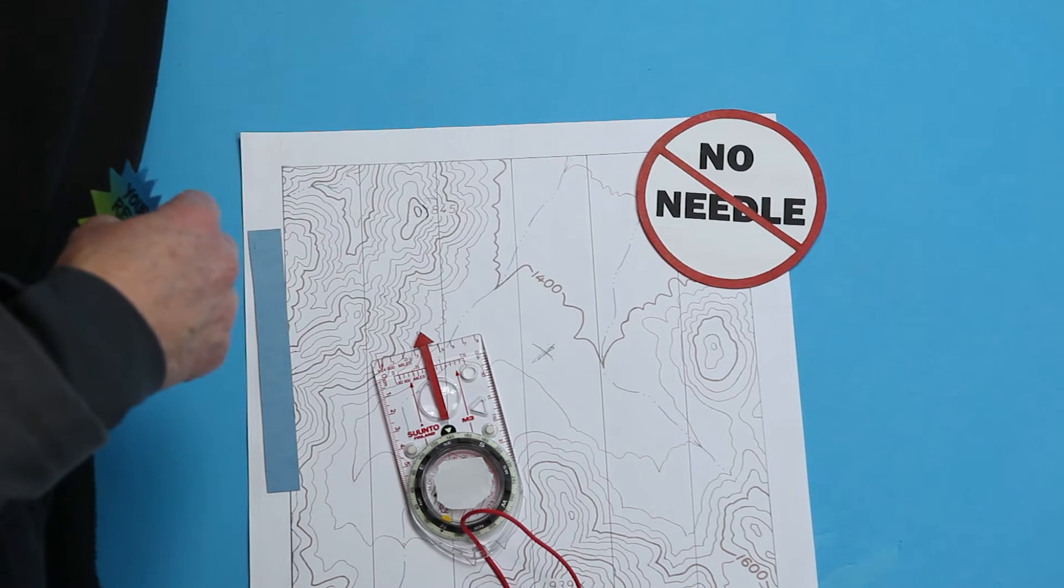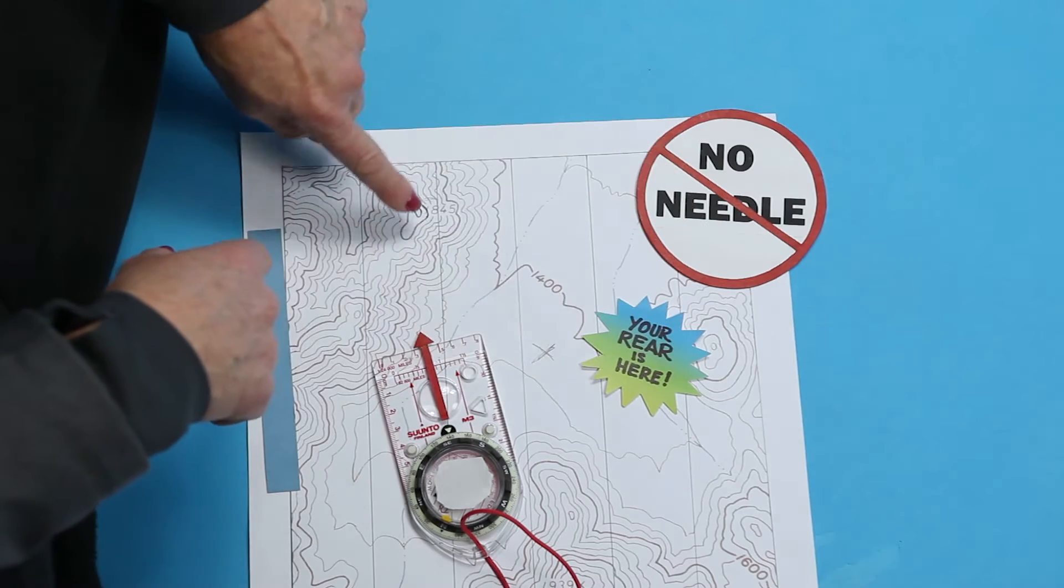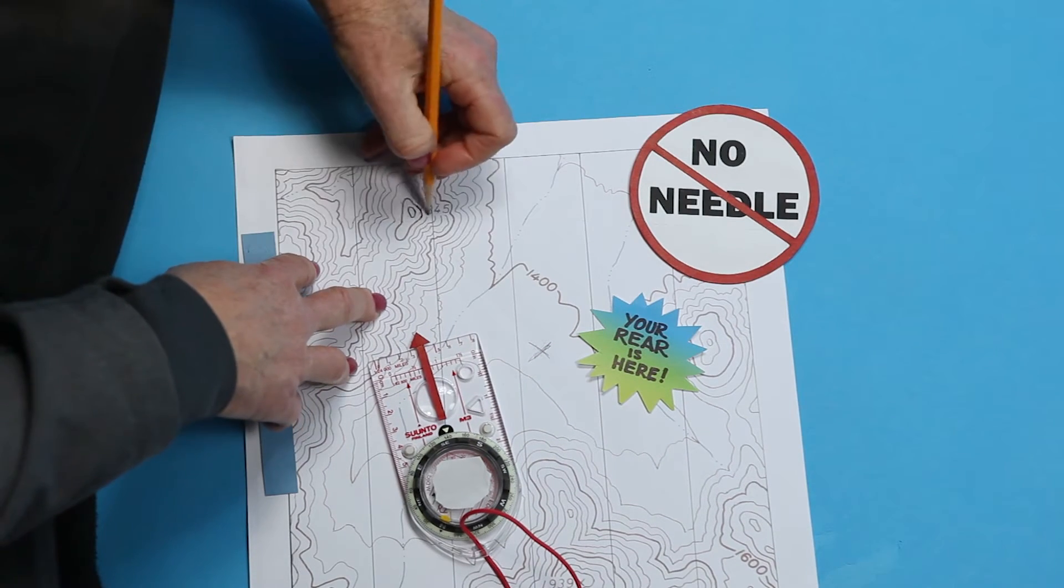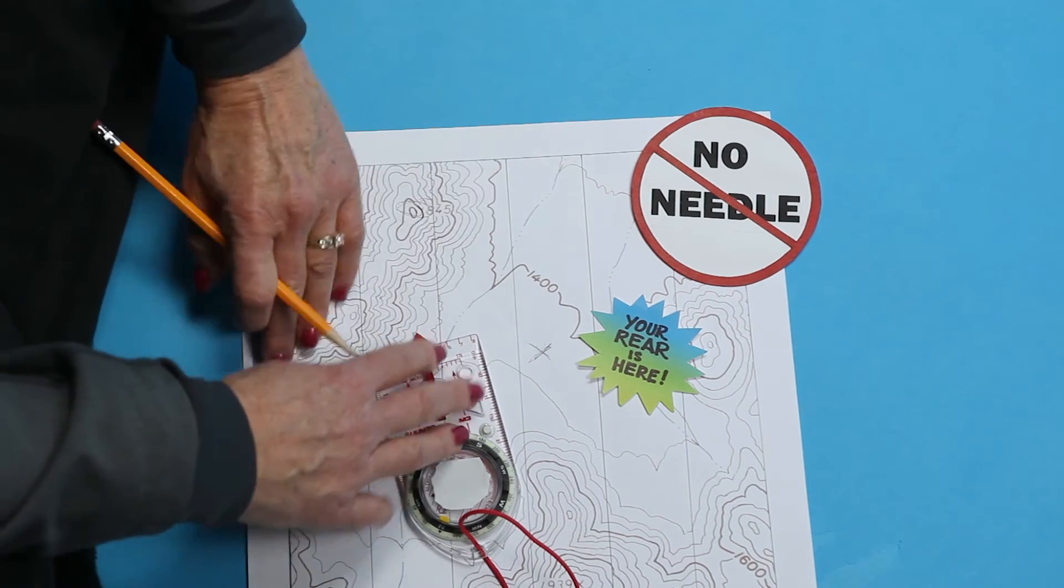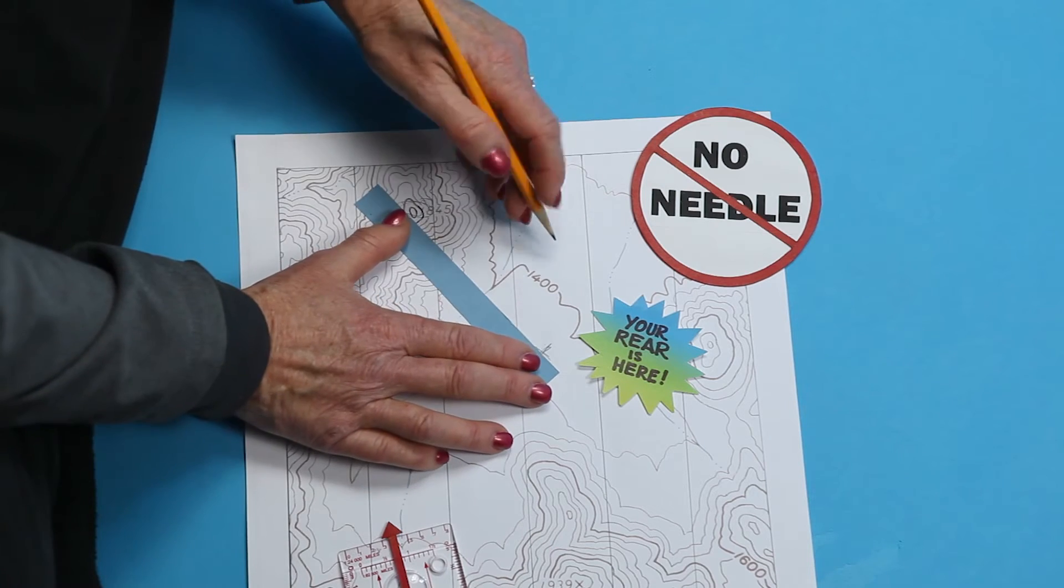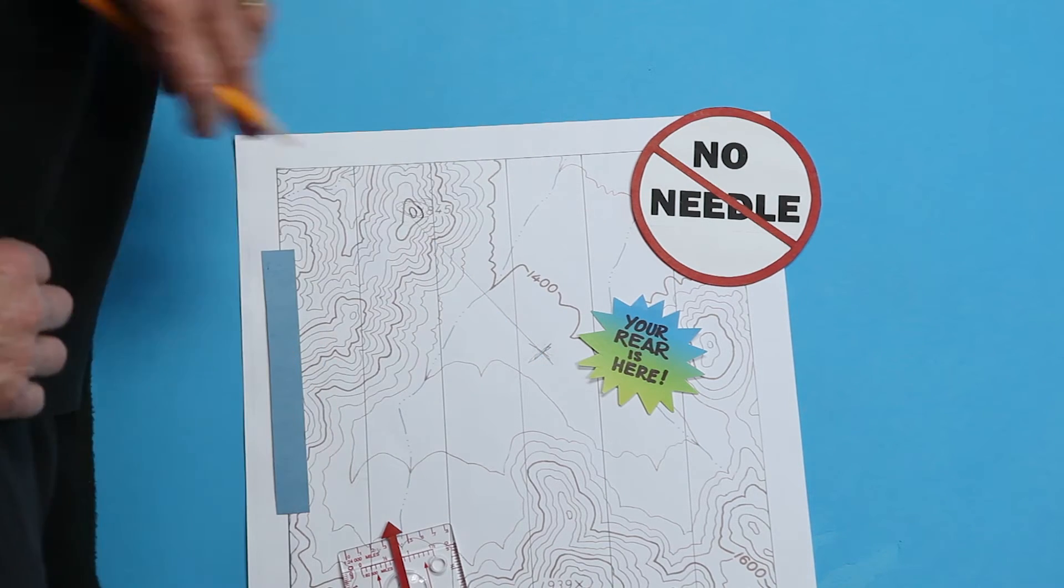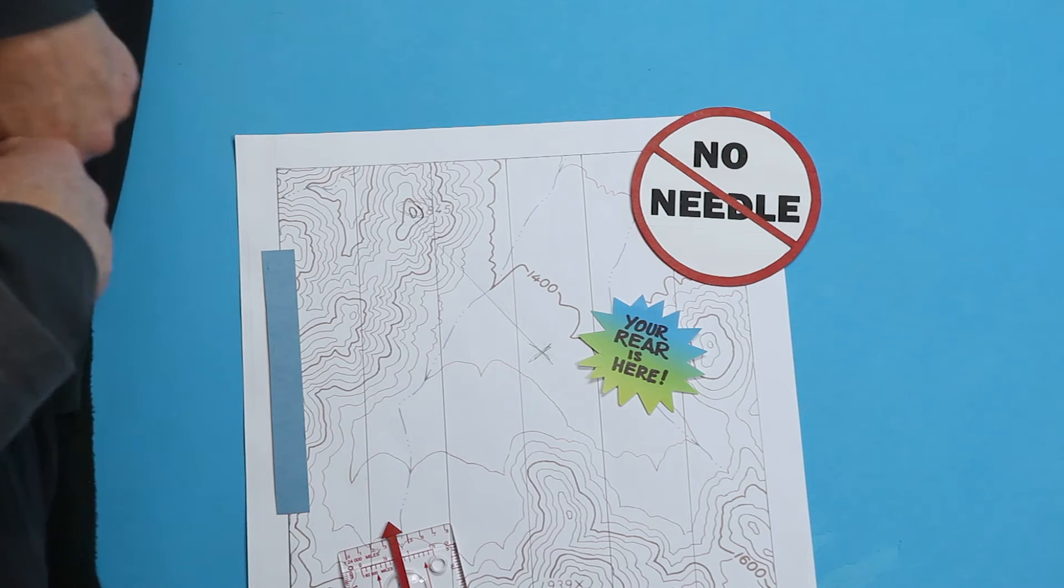Draw an X. Find where you want to go. Now, draw a line between where you are at the X on the map and where you want to go. You don't actually have to draw the line, but it makes it easier to see.